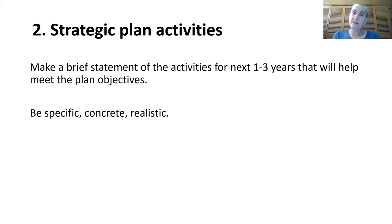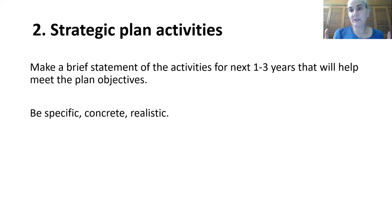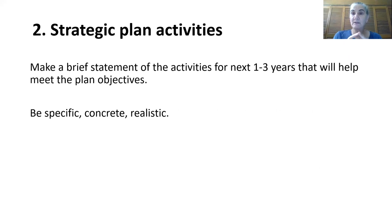The next step, number two, is to plan your activities that will help implement or meet each of those objectives, for the period of time covered by the strategic plan — one to three years. The activities should be concrete, specific, and realistic — things that you can actually do.